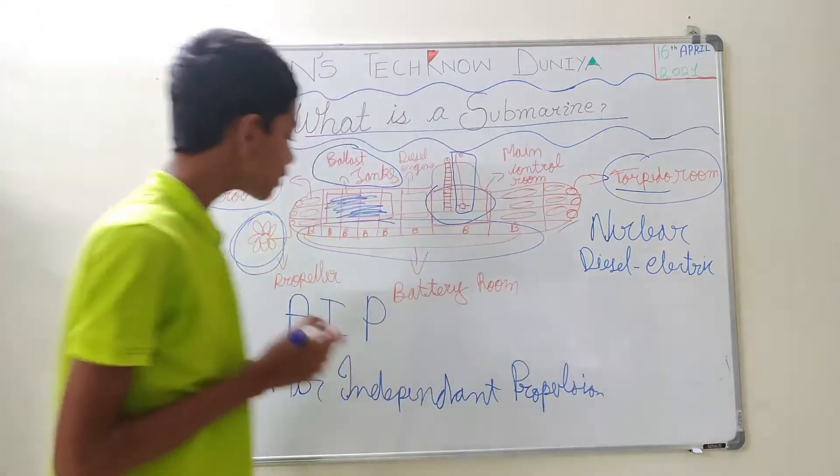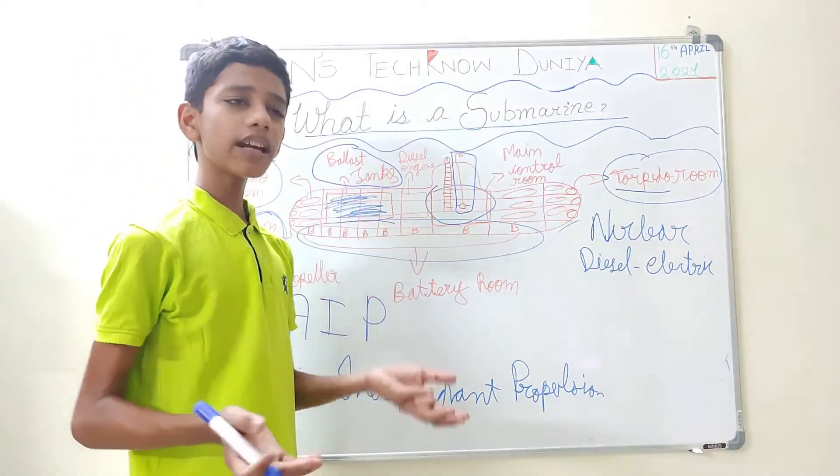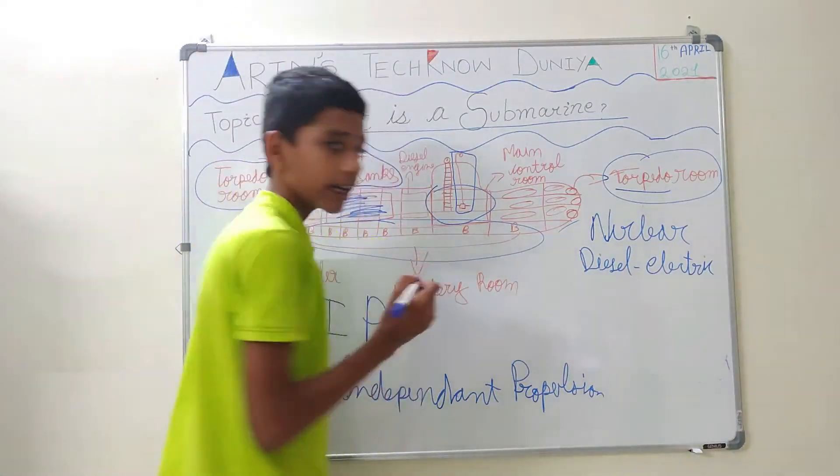What is the meaning of AIP? There is the bio toilet which the submarine has. The submarine has got around 90 crew members. From that, there is a bio toilet.